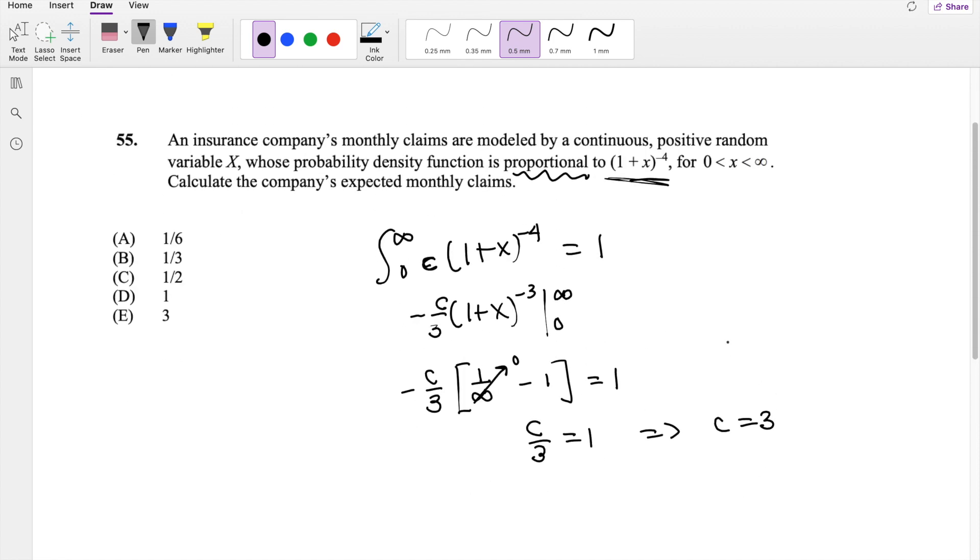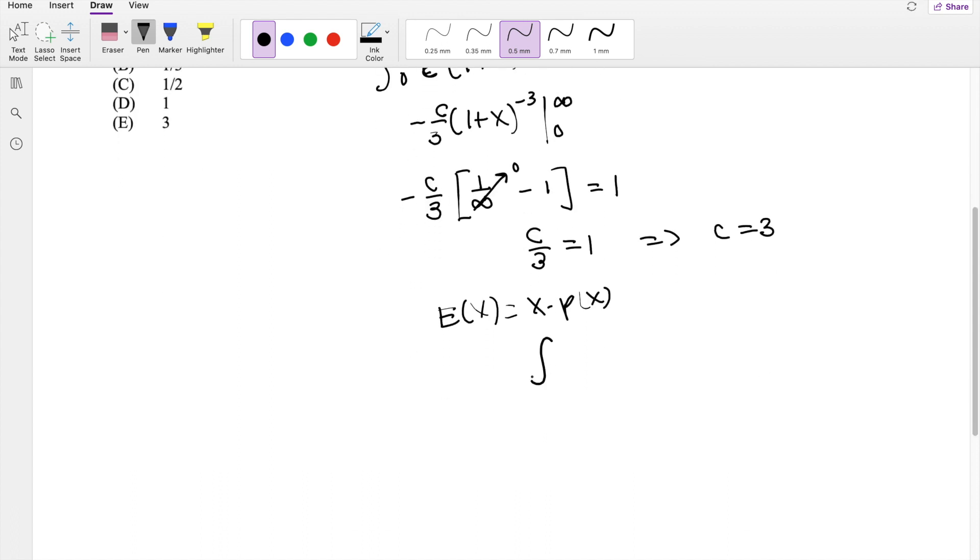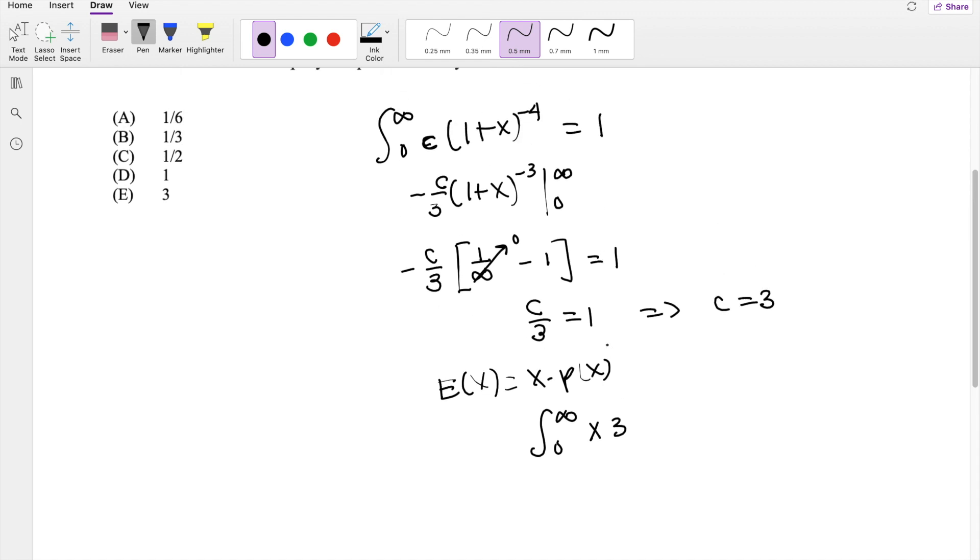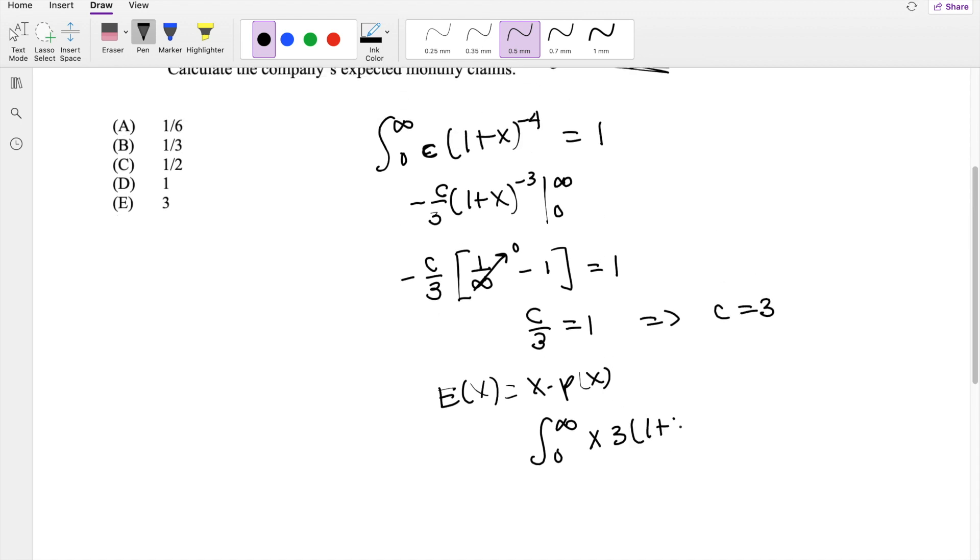Knowing that, we're looking for the expected monthly claims. So we know that for any expectation, this is equal to x times probability function. So in our case, our probability function is going from 0 to infinity of x times c, which is 3, times 1 plus x to the negative 4 dx. So this is just an integration problem.